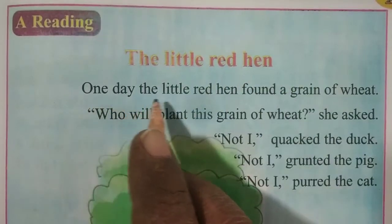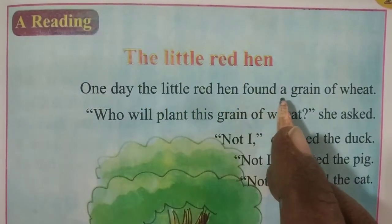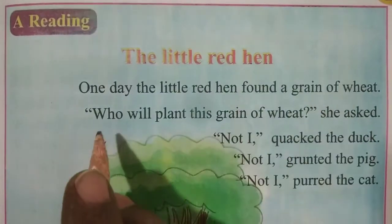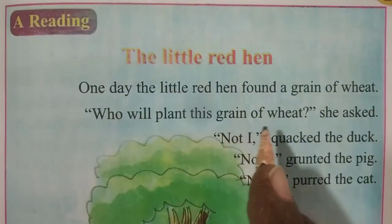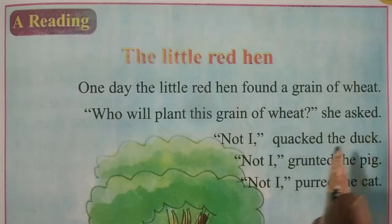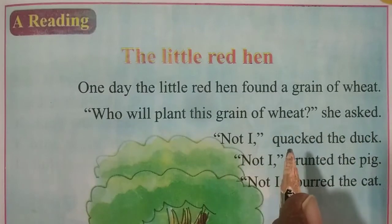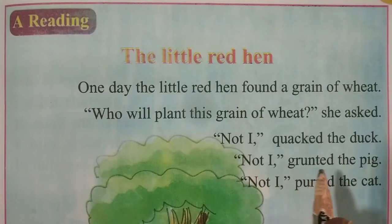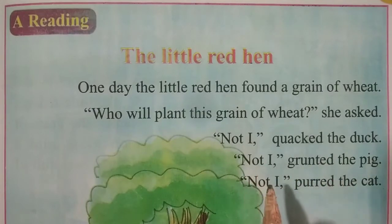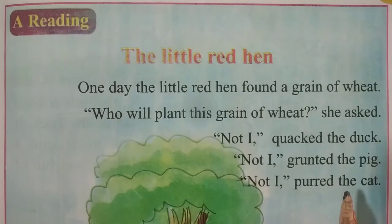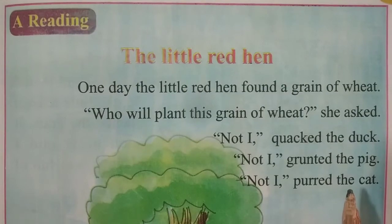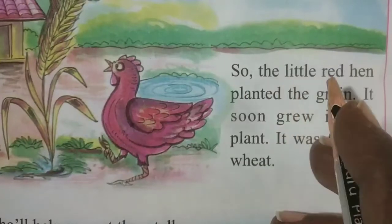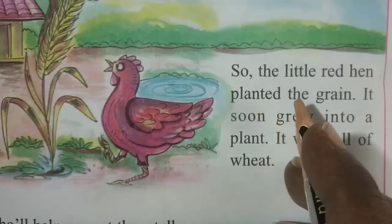One day the little red hen found a grain of wheat. 'Who will plant this grain of wheat?' she asked. 'Not I,' quacked the duck. 'Not I,' grunted the pig. 'Not I,' said the cat. So the little red hen planted the grain.